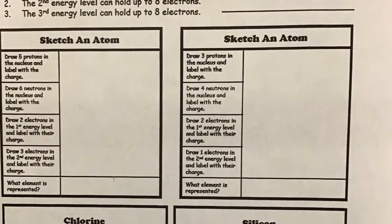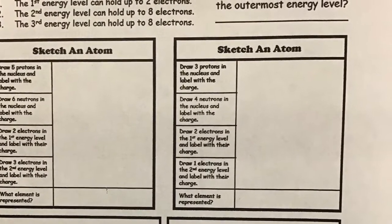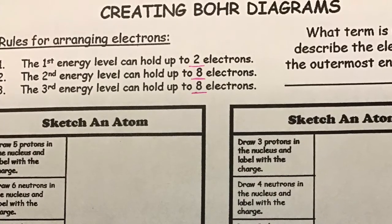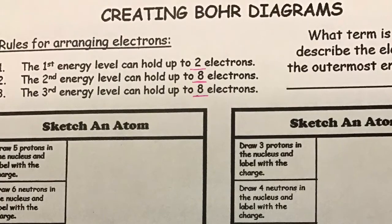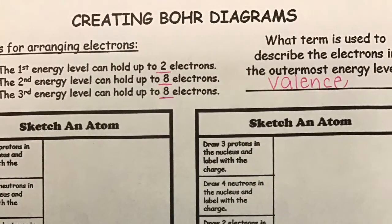Making it even more complicated, there are two sets of rules: one for elements 20 and below and one for elements above 20. Today we will focus on simple elements 20 and below. We call this the 2-8-8 rule.